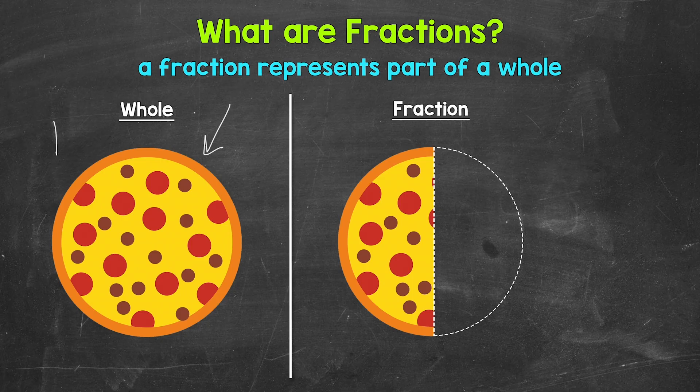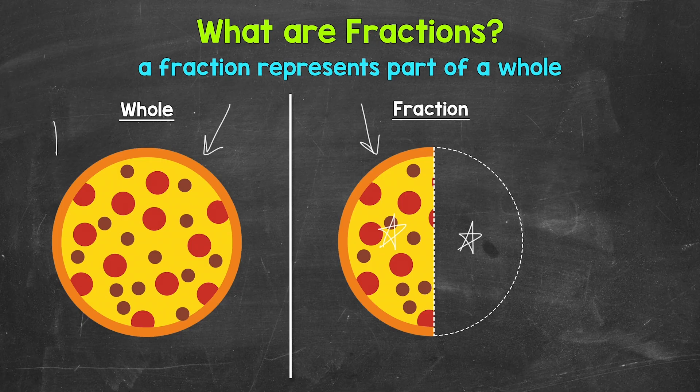But what if we only have part of a whole? For example, let's look at this part of a whole pizza right here. Do we have a whole pizza? No. So we need to use a fraction to represent this amount. Let's say that this amount is what was eaten, and this is what is left. So basically, what part of the whole pizza do we have left?